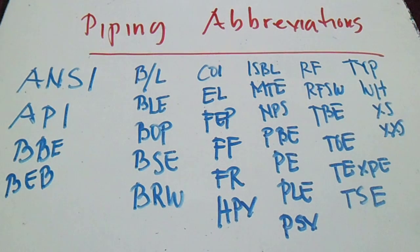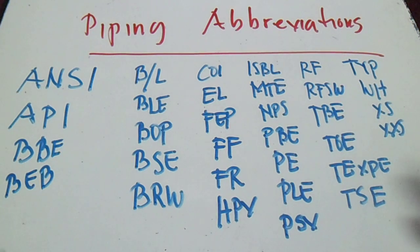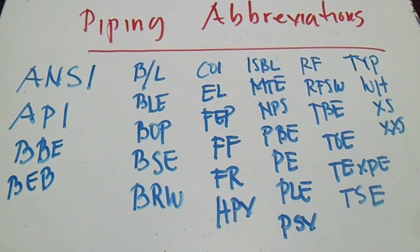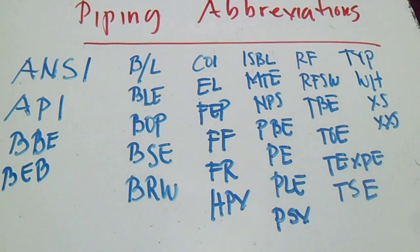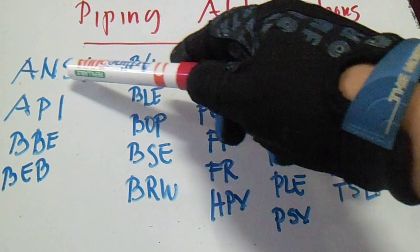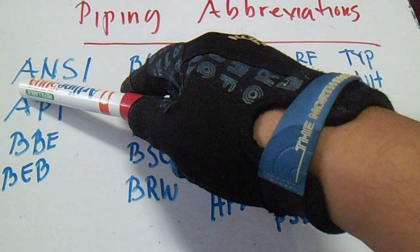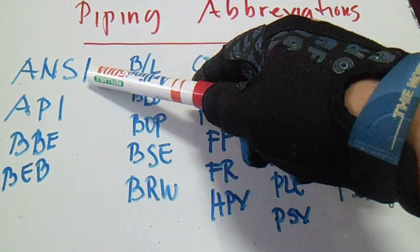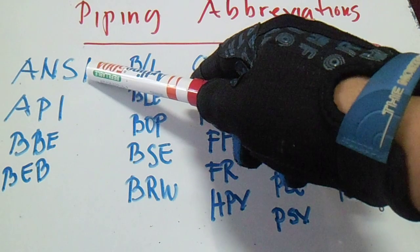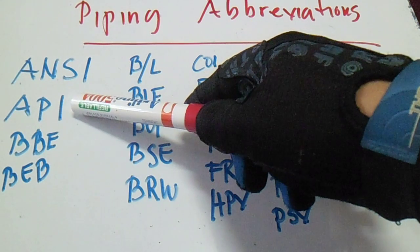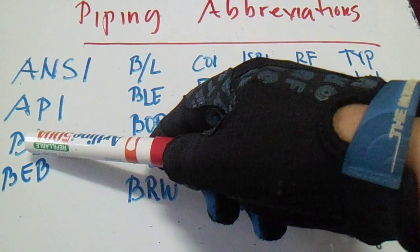So this is the piping abbreviation list — only a few of them, as there are so many piping abbreviations. First, what is ANSI? I hope you have the correct answer. The answer is American National Standards Institute.